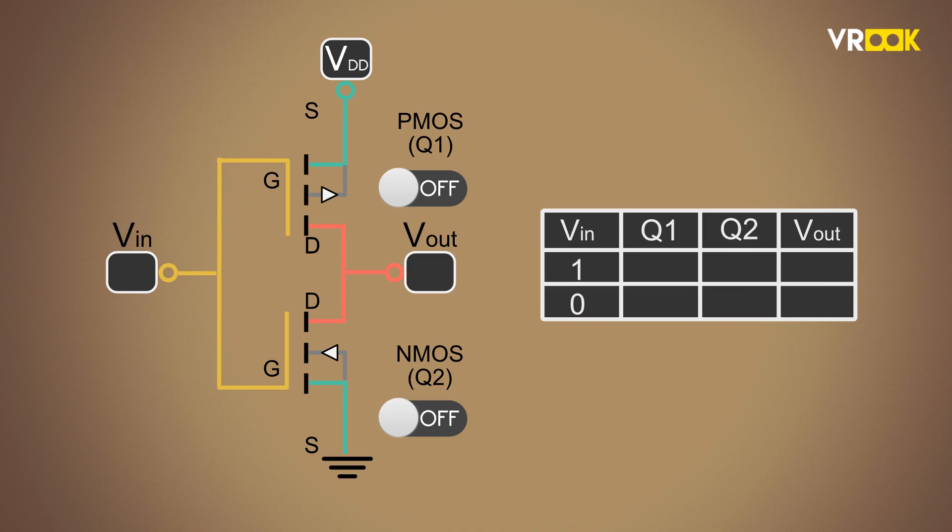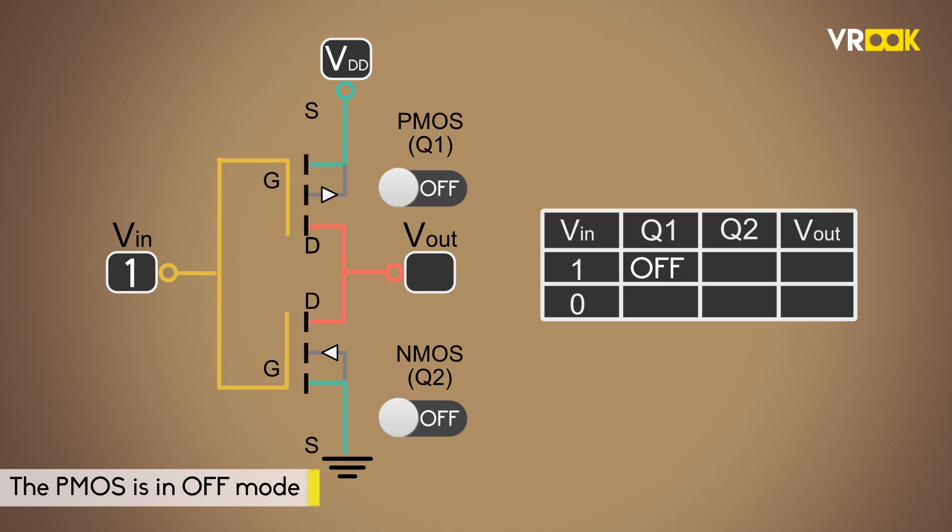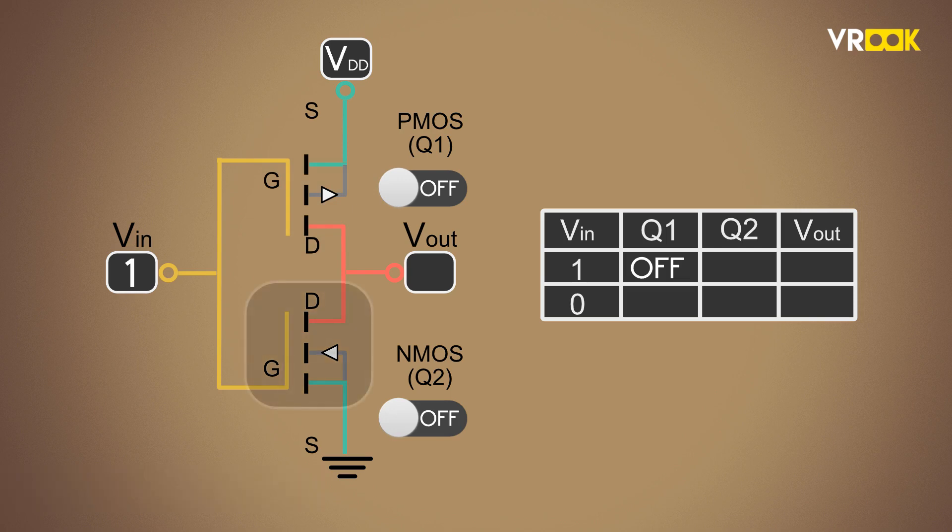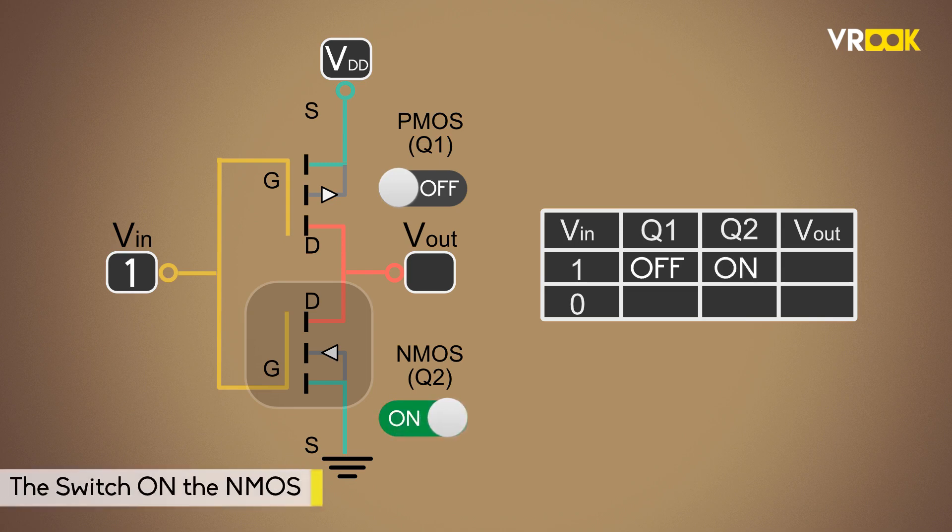When we apply logic high or 1 at input, the gate voltage at PMOS will be at high voltage, but the source is also connected to a high voltage VDD in PMOS. Both the voltages cancel each other and no current flows. Therefore, the PMOS is in OFF mode. But at NMOS, the gate voltage will be high and the source is connected to the ground. This means the gate voltage is more than the threshold voltage of NMOS. This will switch on the NMOS, but the output terminal will be short-circuited and connected to ground at NMOS.